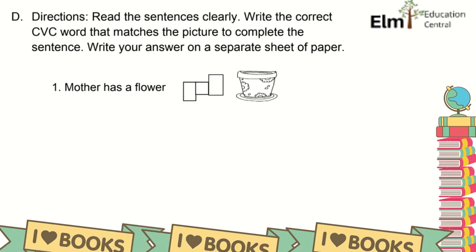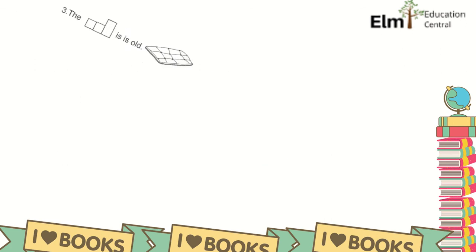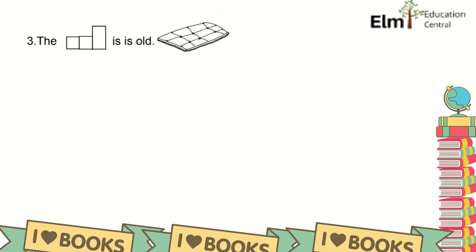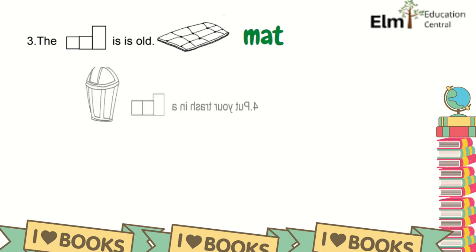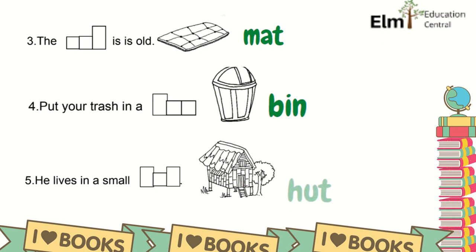Read the sentences clearly. Write the correct CVC word that matches the picture to complete the sentence. Write your answer on a separate sheet of paper. Number 1: Mother has a flower pot. Number 2: I will buy a new pen. Number 3: The mat is old. Number 4: Put your trash in a bin. And number 5: He lives in a small hut. So these are all again in CVC pattern.